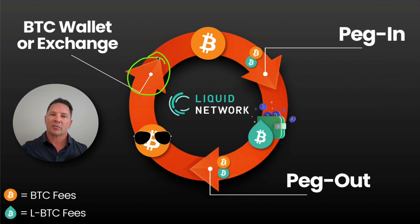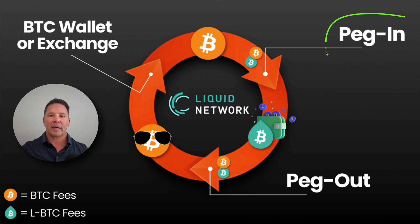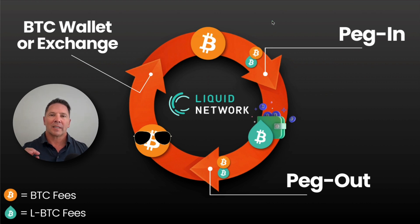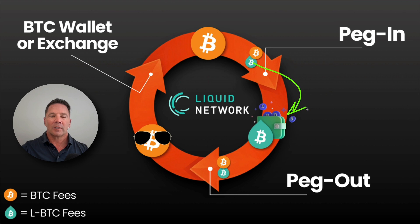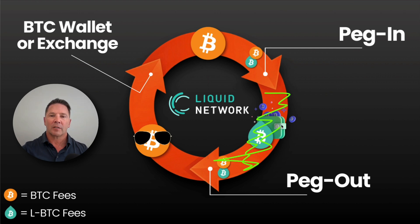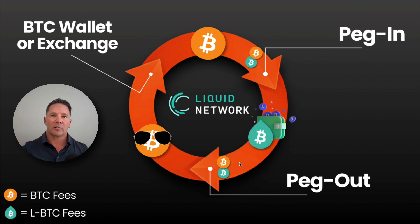You start with a Bitcoin wallet or exchange account and send your Bitcoin to the Liquid network using what's called a peg-in transaction. Your Bitcoin travels along the main chain and goes into a multi-sig wallet that the Liquid network represents — it's just a multi-sig wallet sitting on the Bitcoin main chain. When you send Bitcoin to that multi-sig wallet, an equivalent amount of Liquid Bitcoin gets generated and sent to your Liquid wallet. At that point, it is confidential. All transactions you perform on the Liquid network are confidential, only visible by you and the person or entity you're sending the Liquid Bitcoin to. Nobody but the two parties can see it.